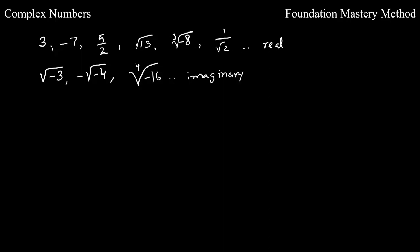But if you have a number under a square root that is negative — like square root of negative 3, square root of negative 4, or a fourth root of a negative number — these are all imaginary numbers. The exponent here is called a rational exponent. If it is 3, 5, or 7 (odd), it is still a real number. But if it is even — for example, the exponent of negative 3 is 1/2, the exponent of negative 4 is 1/2, the exponent of negative 16 is 1/4 — these are all imaginary numbers.